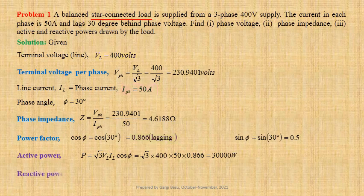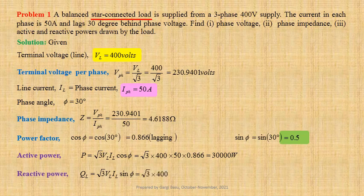Reactive power QL equals root three times VL into IL sin phi. Using values we get root three into 400 into 50 into 0.5, that gives us 17,320.51 volt ampere reactive.